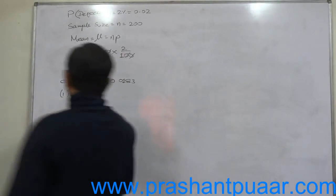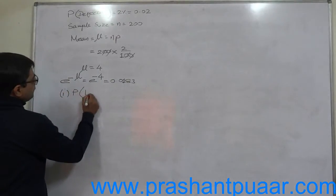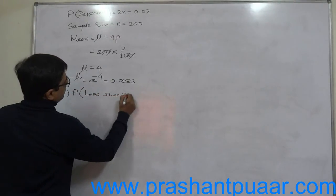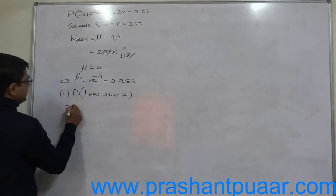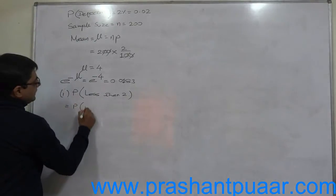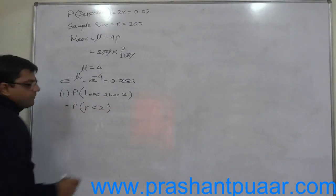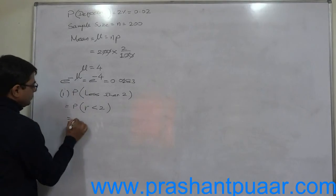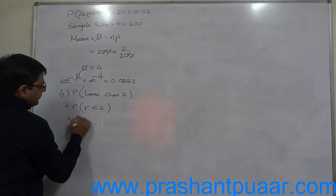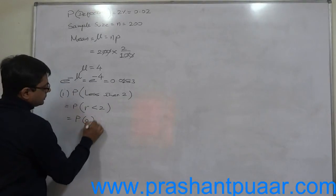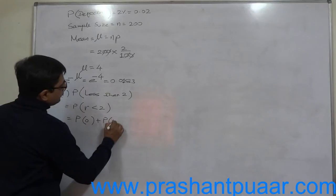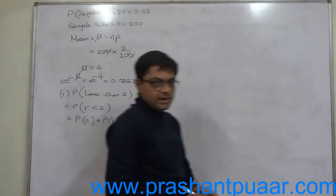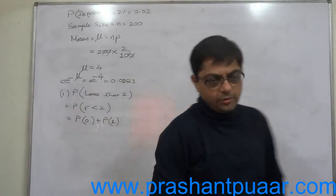The first sub-question asks: what is the probability that out of a sample of 200 bulbs, less than 2 bulbs are defective? Probability of less than 2 means r is less than 2, so we need probability of r = 0 plus probability of r = 1, since 0 and 1 are the only numbers less than 2.